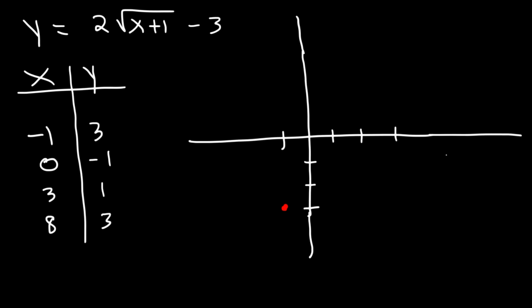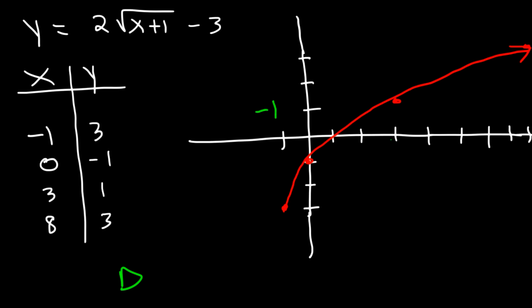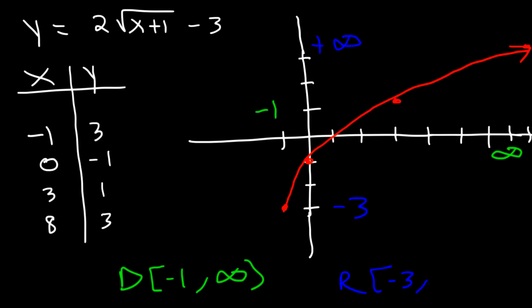Now we plot the points: negative 1 comma negative 3, then 0 comma negative 1, then 3 comma 1, and 8 comma 3. The domain is from negative 1 to infinity. The range is from negative 3 to positive infinity.